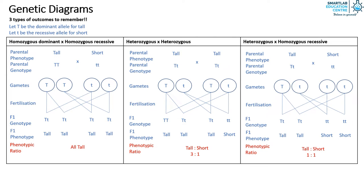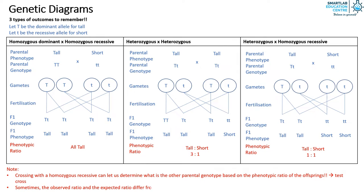Do note that should the other parental genotype be unknown, crossing it with a homozygous recessive can let us determine what is the unknown parental genotype based on the phenotypic ratio of the offsprings. This is known as the test cross. Also note that sometimes the observed ratio and the expected ratio differ from one another, and this occurs when the sample size is small, hence sample is not random.